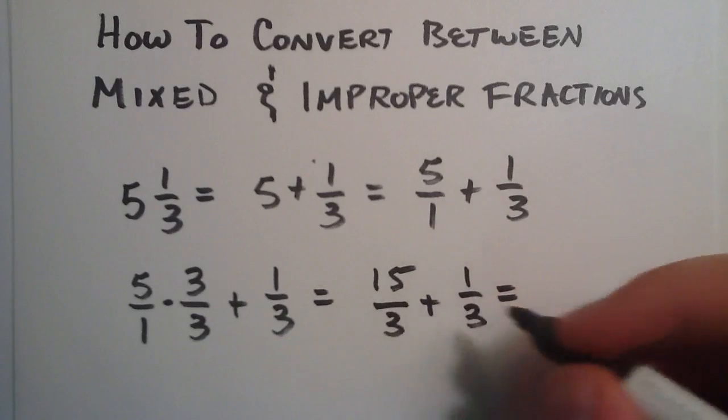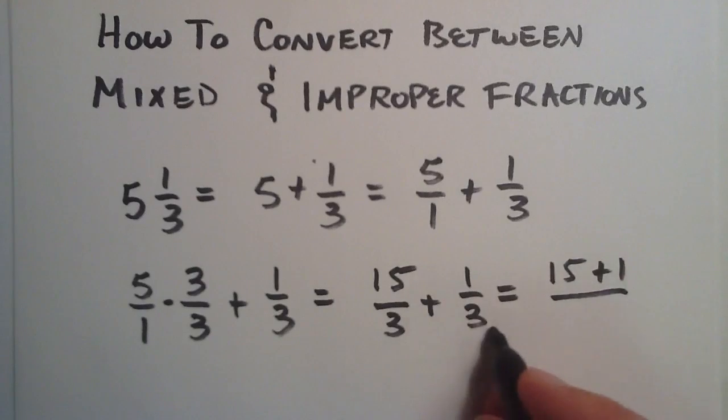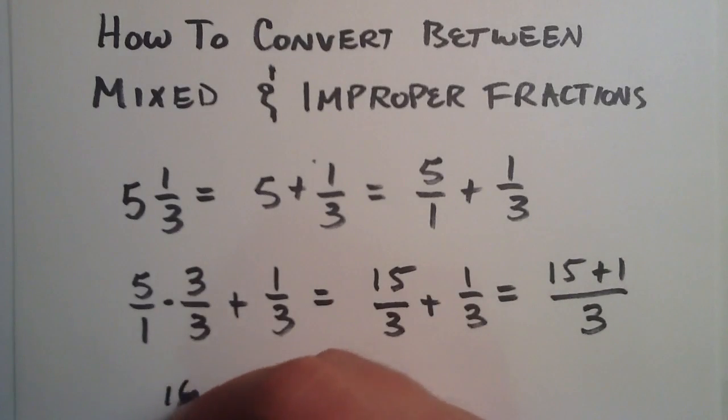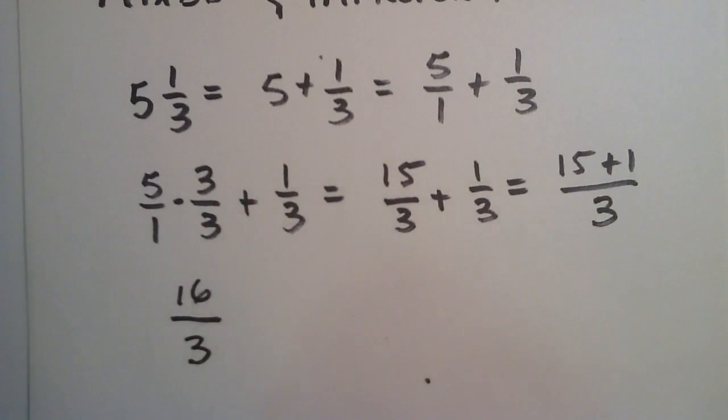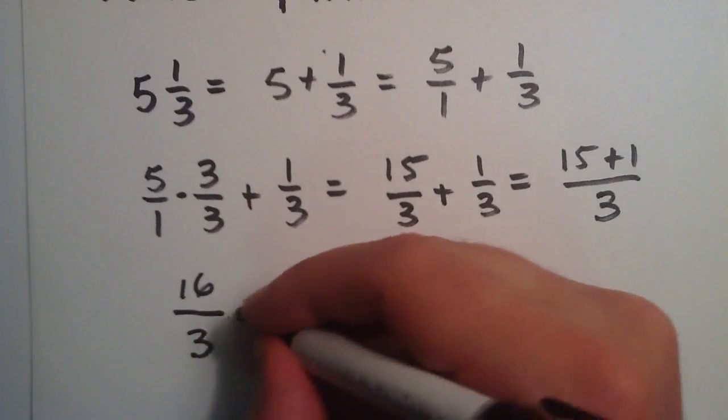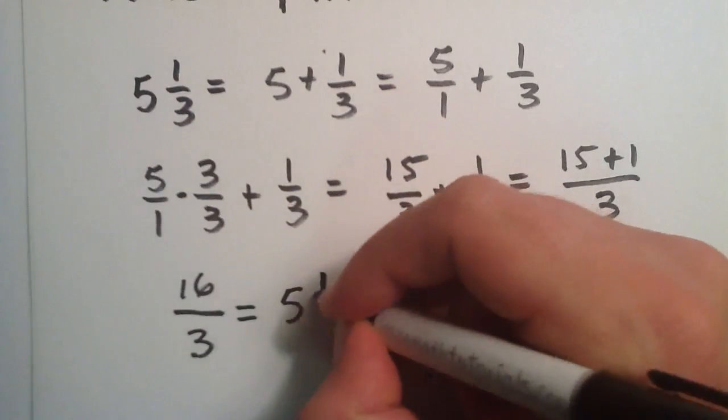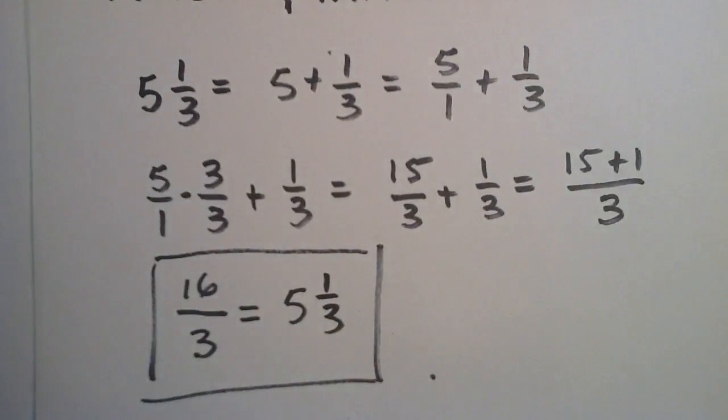Which, adding the numerators together, is 15 plus 1 over the common denominator 3. Now 15 plus 1 is 16, and 3 is just 3. So 16 over 3 is the improper fraction, which represents the mixed fraction 5 and 1 third. It's really the same number written in two different forms.